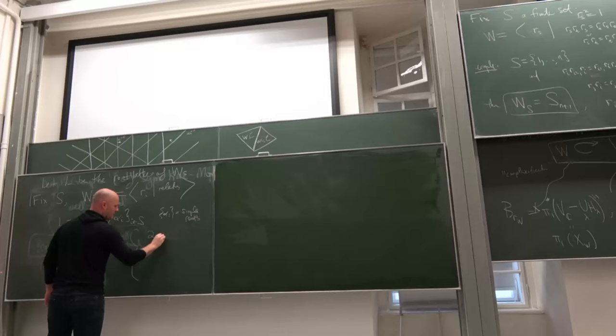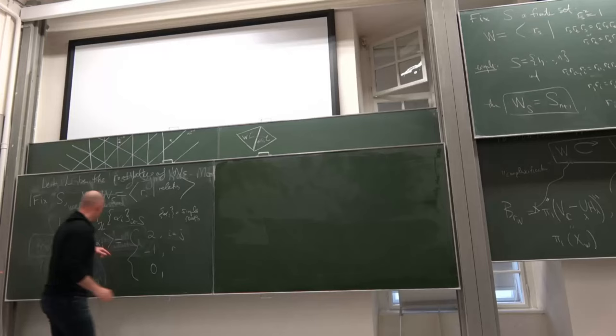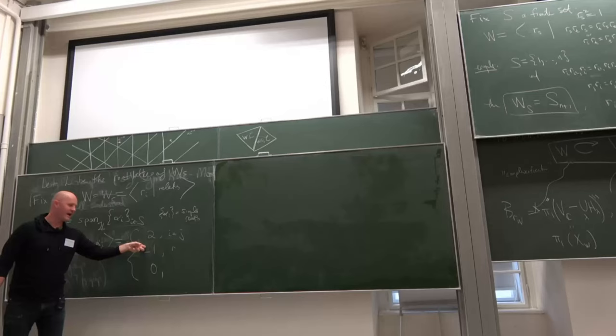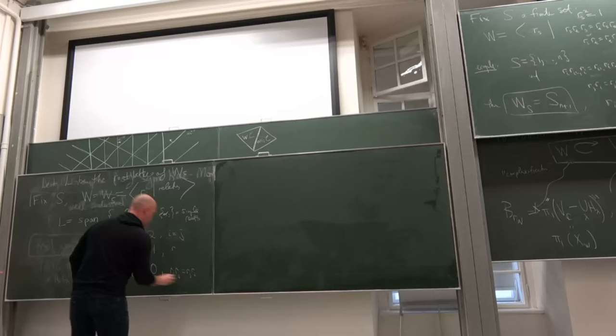What is this pairing? When i equals j, the pairing is 2. The other possible values are minus 1 and 0. Each simple root corresponds to a generator of the Weyl group. If two generators braid, the pairing is minus 1; if they commute, the pairing is 0. So: 0 when R_i and R_j commute, and minus 1 when they braid. This is a lattice — a free abelian group equipped with a symmetric bilinear form.